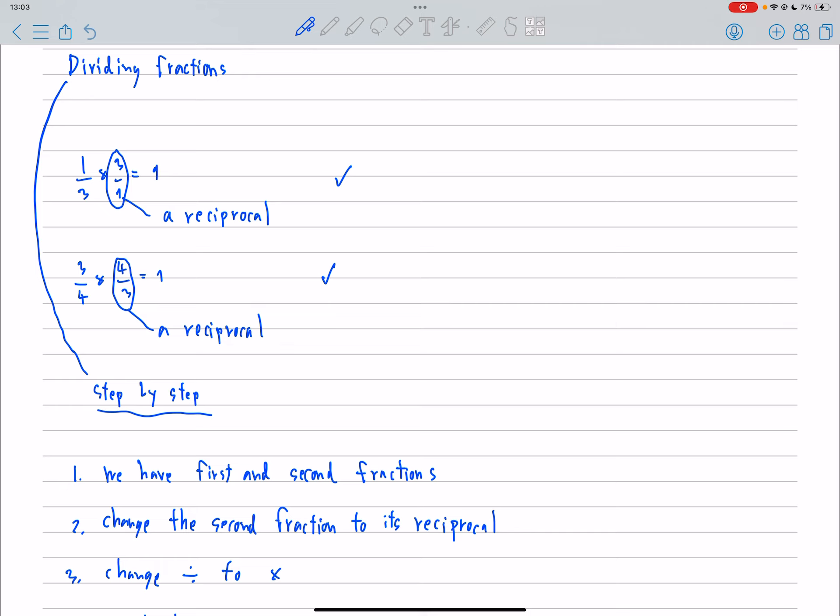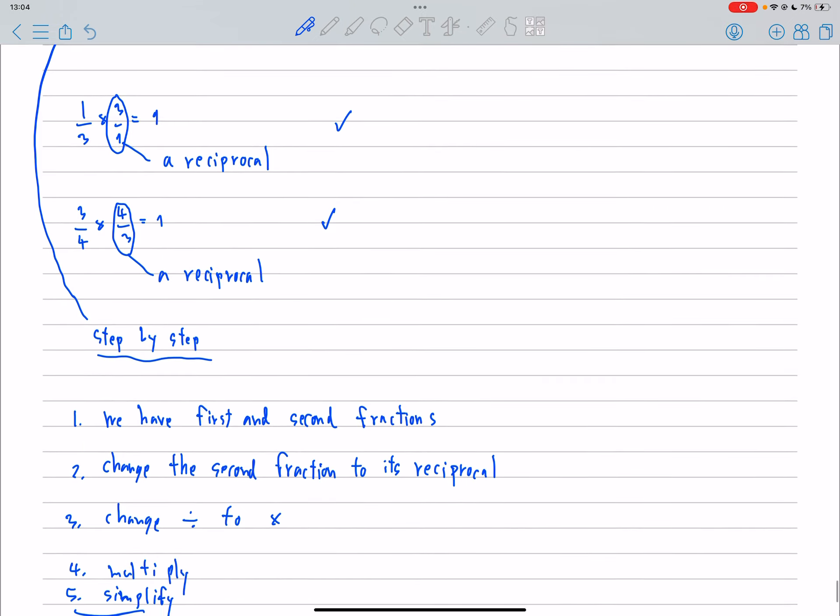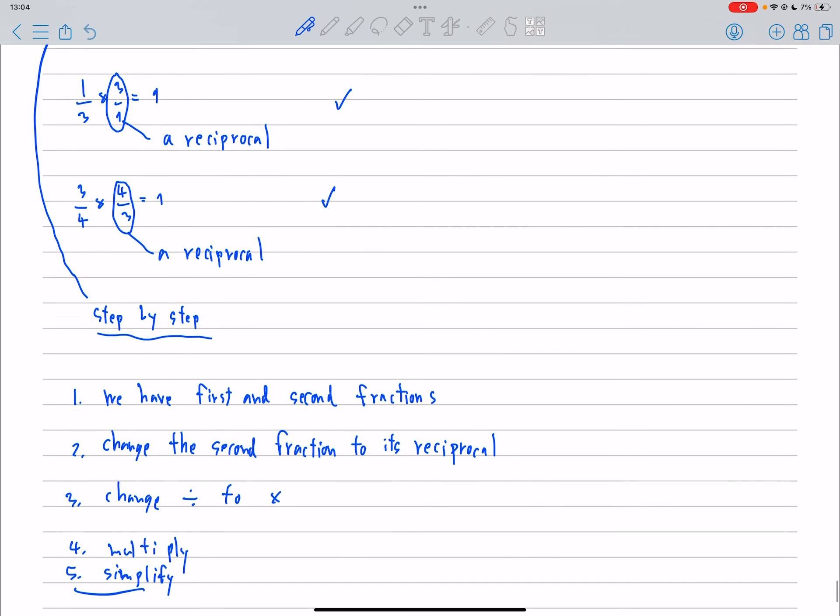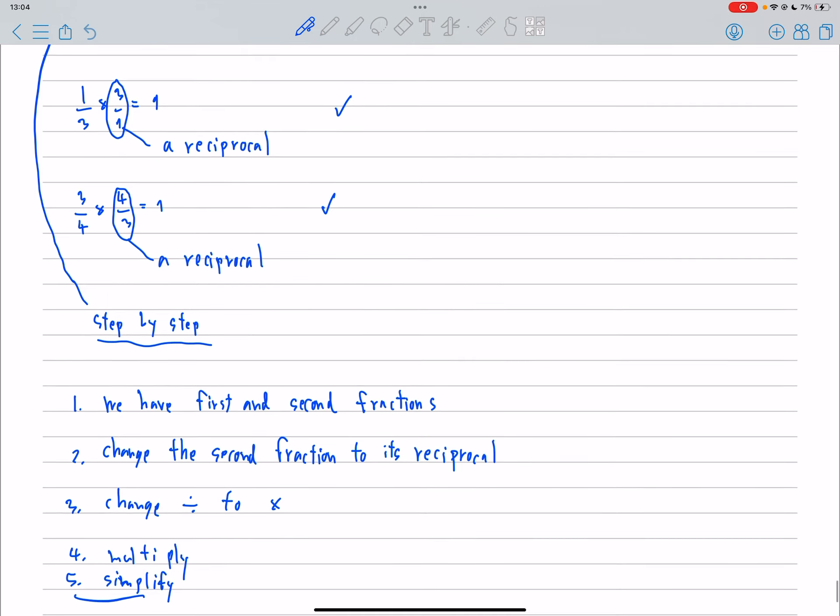And then we change the second fraction to its reciprocal. And we have to change the divide to multiply. And then we multiply. And finally, if we can simplify or cancel, we do it.